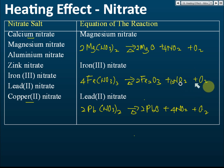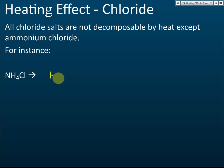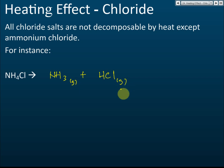All chloride salts are not decomposable by heat — heating gives no effect — except ammonium chloride. When ammonium chloride is heated, it gives ammonia gas and hydrogen chloride gas, similar to heating ammonium sulfate which also gives ammonia gas.